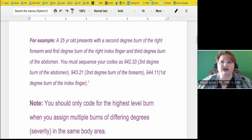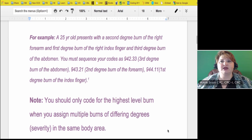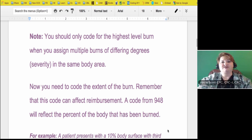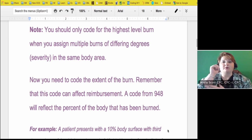You should only code to the highest level of burn when you assign multiple burns of different degrees and severity in the same body area. Let's say it is the forearm and you have first, second, and third-degree burns of the forearm, you would only code third-degree of that body area. But if you have different body areas, then you code them separately with the most severe burn to be listed first. If you have second-degree and second-degree, then it just doesn't matter.